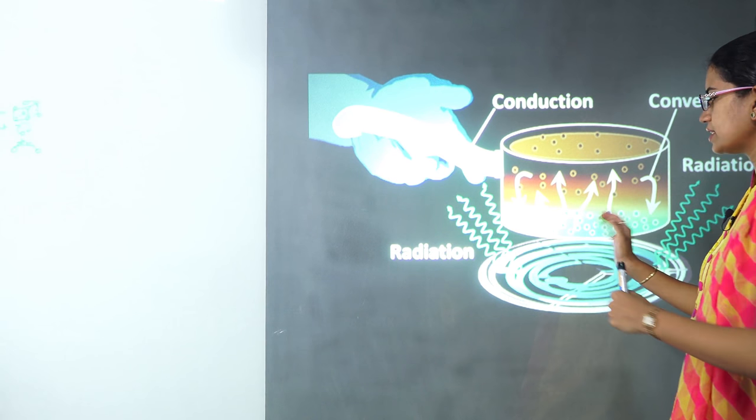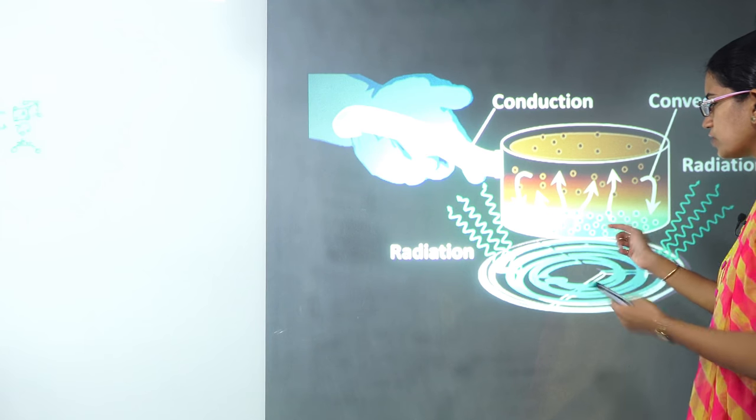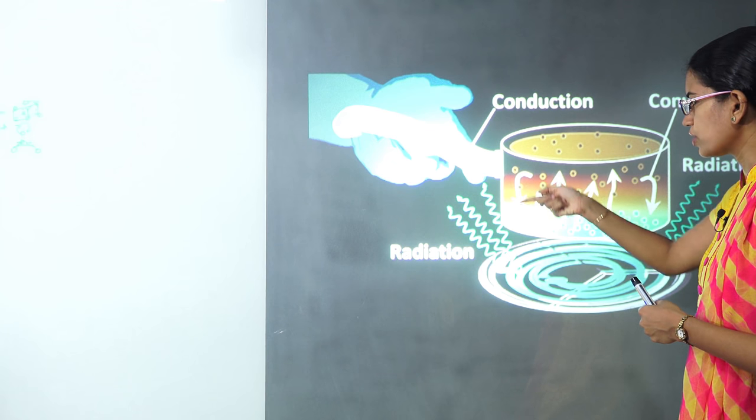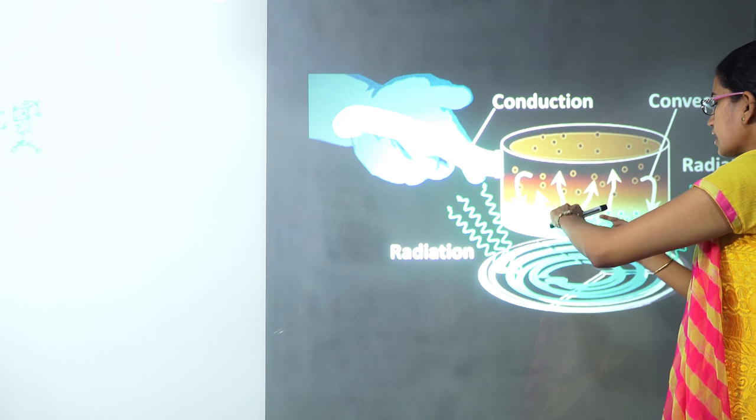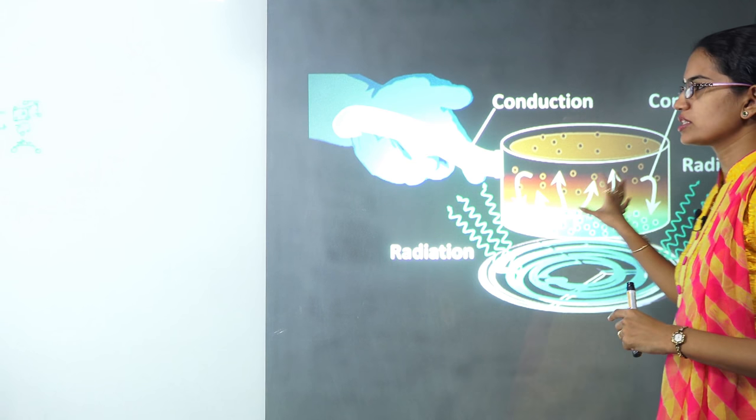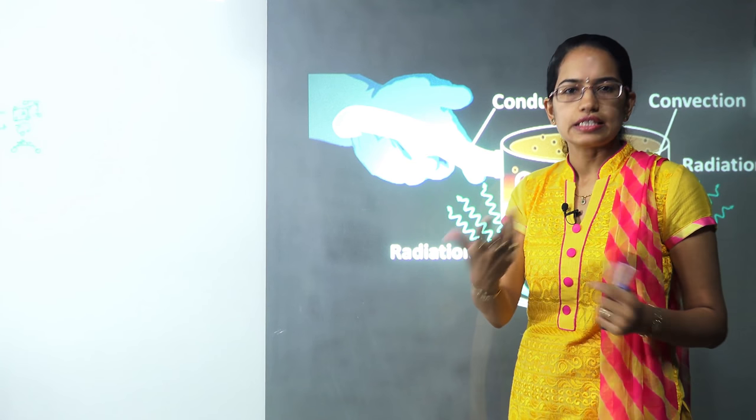In convection, what happens is the hot molecules which are in the lowermost surface get moved up and these cold molecules move down. There is complete movement of the molecules, and that process is known as convection, commonly seen in liquids.